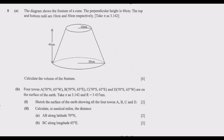Let us move to Question 8. The diagram shows the frustum of a cone. The perpendicular height is 40 cm, the top and bottom radii are 10 cm and 30 cm respectively. Take pi as 3.142. Calculate the volume of the frustum.